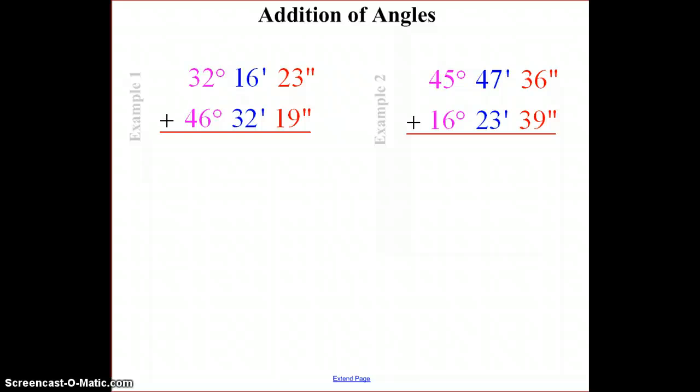Alright, so in order to add angles together, we need to add up the common parts. So first we have 32 degrees, 16 minutes, and 23 seconds. You may consider the degree to be like an hour. And we're adding to that an angle whose measure is 46 degrees, 32 minutes, and 19 seconds.